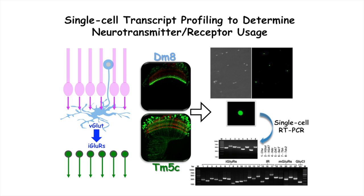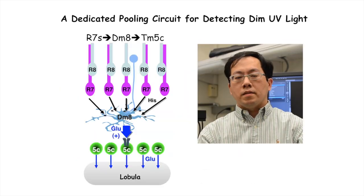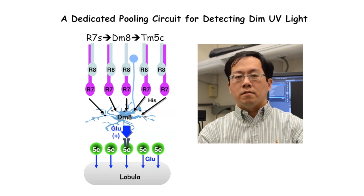RNA-mediated knockdown further demonstrated that the glutamate output of Tm8 and ionotropic receptors in Tm5c are essential for UV preference. By examining the connectivity patterns, we identified a dedicated pooling circuit from R7 to Dm8 to Tm5c that mediates the animal's innate behavior for UV preference.